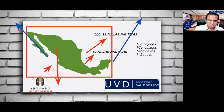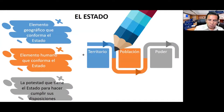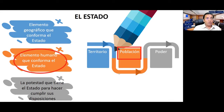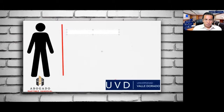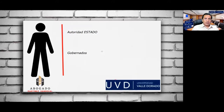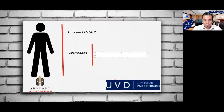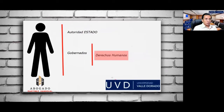El siguiente elemento es el elemento humano: la población. Dentro de este elemento humano vamos a verificar que se conforma por las propias autoridades que representan al estado y los propios gobernados que interactúan. Las autoridades tienen la obligación de preservar y garantizar sus derechos humanos.